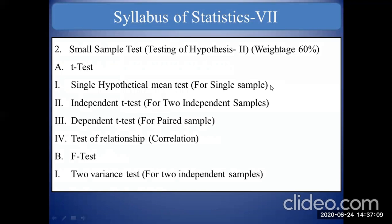This was Unit one, and the weightage of Unit one is 40 percent. Students, this is a very easy unit. If you want to obtain 20 out of 20 marks, you can easily do so from this chapter. My advice is to first go for chapter number one, Decision Theory.